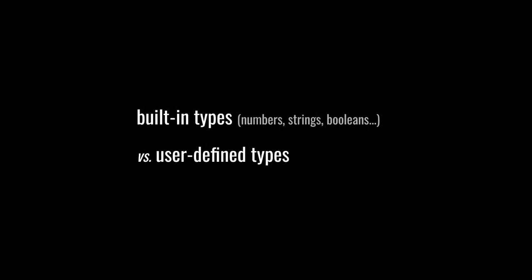As we discussed in the prior video, every programming language has some set of data types built into the language, and this set usually includes numbers, strings, booleans, and perhaps a few other basic types. On top of these built-in types, the programmer can themselves define additional data types as they require. Confusingly, these are often called user-defined data types, the user here being the programmer, the user of the language.